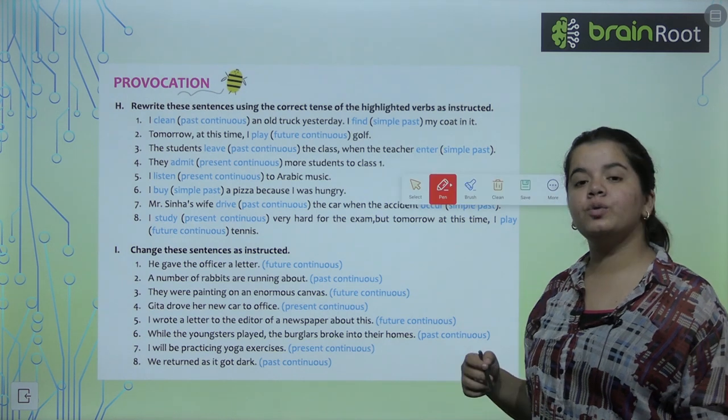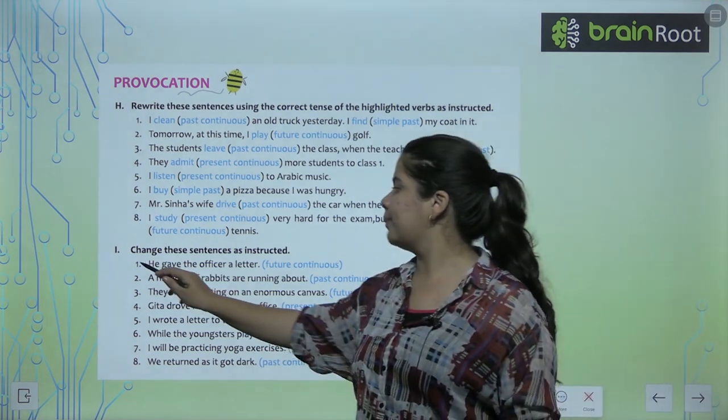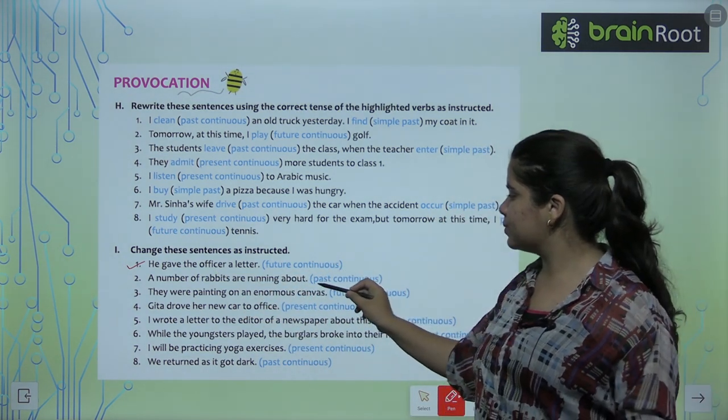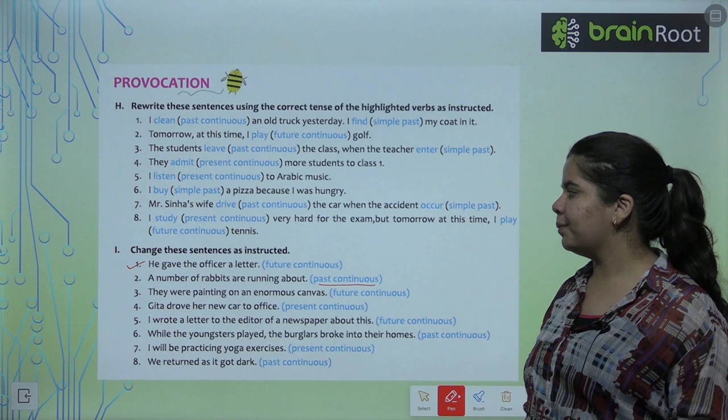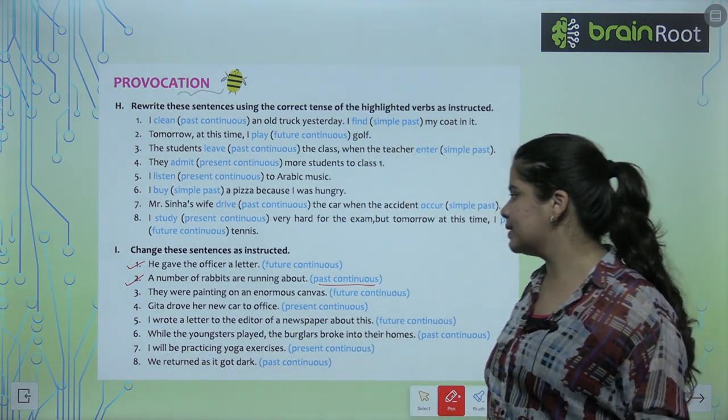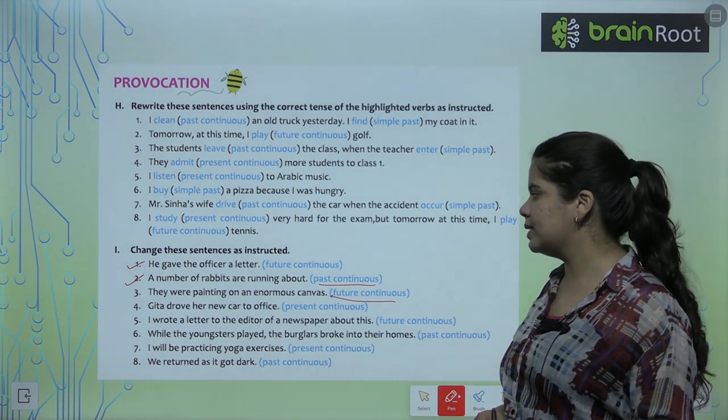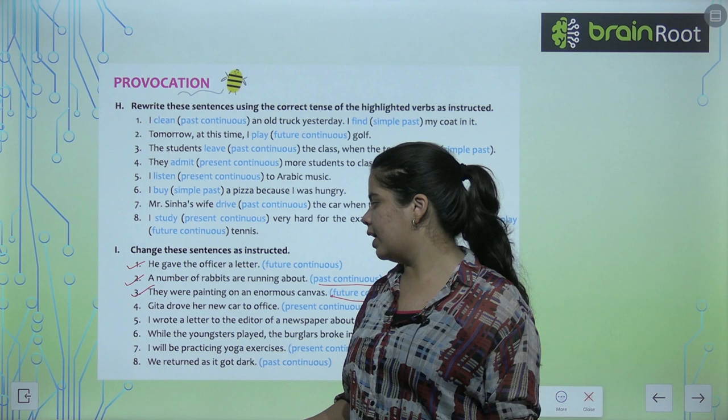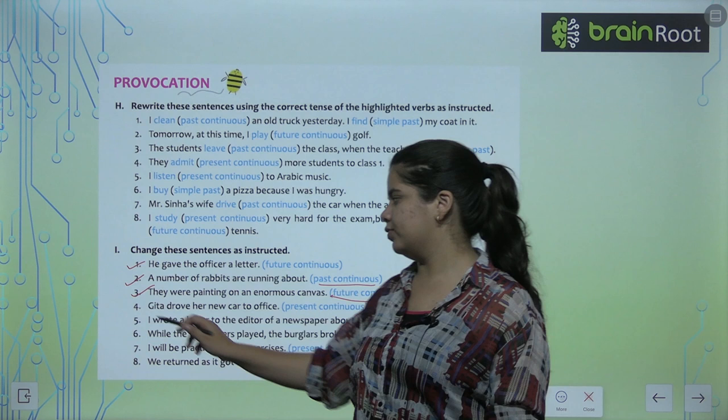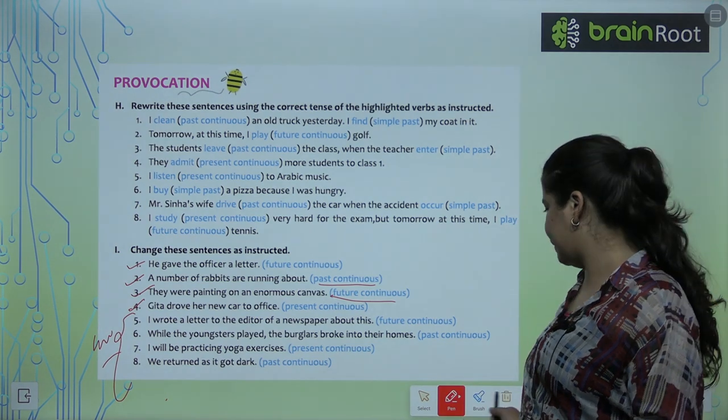Now we're going to move further with another exercise. We have to rewrite these sentences using the correct tense of the highlighted verbs. I clean an old truck yesterday, I find my coat in it. You have to change what is given in brackets. How will you do it? I was cleaning an old truck yesterday, I found my coat in it. Second, tomorrow at this time I will be playing golf. Third, the students were leaving the class when the teacher entered. Fourth, they are admitting more students to class one now. Fifth, sixth, seventh and eighth I want you to try yourself. Next, change these sentences as instructed. He gave the officer a letter. He will be giving the officer a letter. A number of rabbits are running about. A number of rabbits were running about. Third, they were painting on an enormous canvas. Future continuous, they will be painting on an enormous canvas. Geeta drove her new car to the office. Geeta is driving her new car to the office. I hope it's clear. The last four I will give you as your homework for you to try.